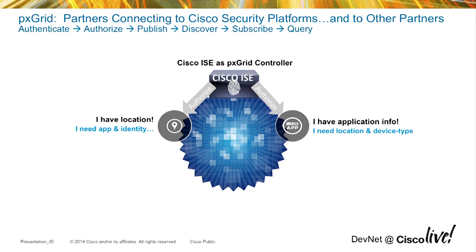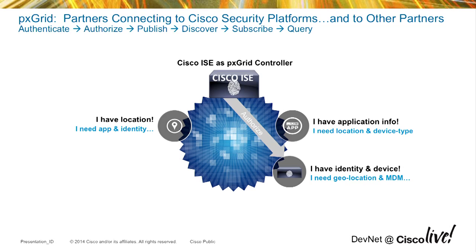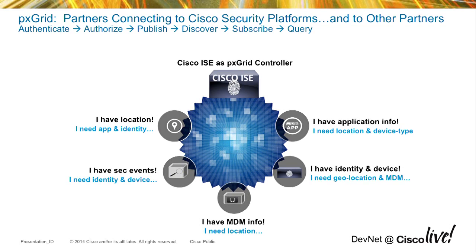You get authenticated first, then authorized. After you get authorized, you can publish what you want to share with the rest of the PX Grid community. Vendor A publishes, vendor B publishes, and then you discover what is available on the grid and pick and choose what is of interest to you. ICE, besides being the grid controller, can also benefit because it can act as a consumer of this information. In this way, the grid is set up and multiple partners can participate.